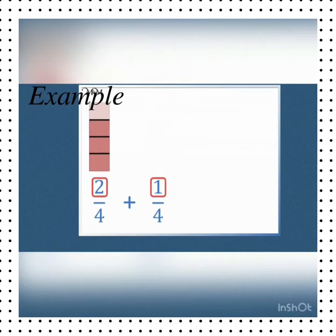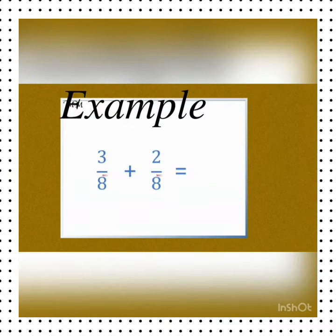We have two fractions here, 3 by 8 and 2 by 8. If we want to add, we keep the denominator as it is and add the numerators. 3 plus 2 we will get 5, and we will get our final answer 5 by 8.